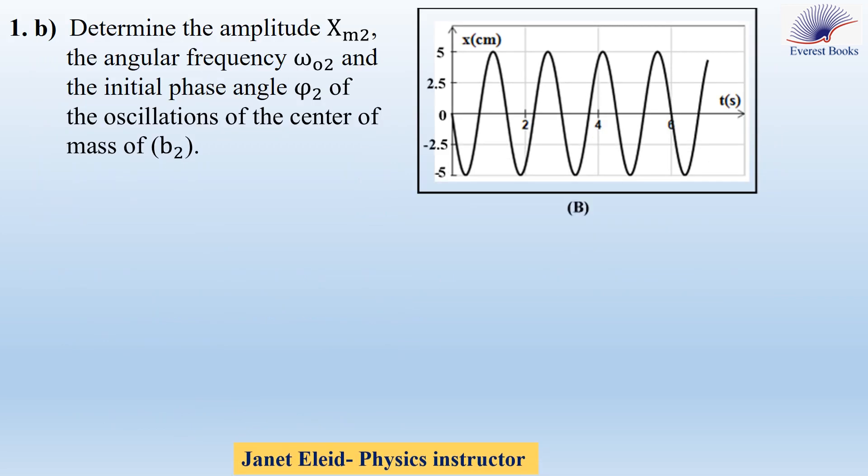Let's move to part 1b: determine the amplitude xm2, the angular frequency omega_02, and the initial phase angle phi_2 of the oscillations of the center of mass of B2. Starting with the amplitude — as you see in the curve, the amplitude is 5 cm.